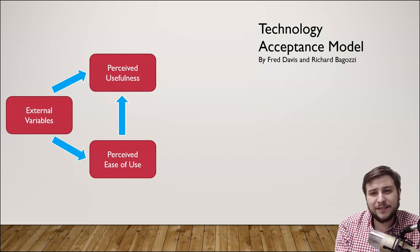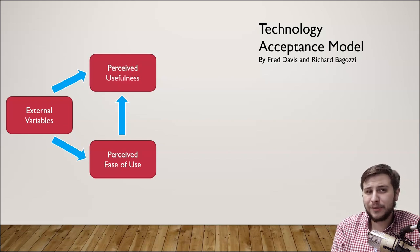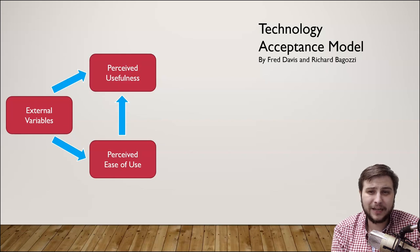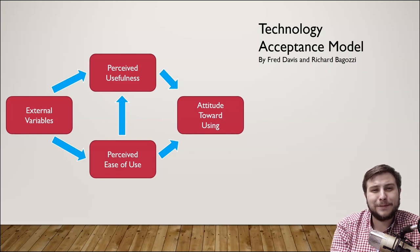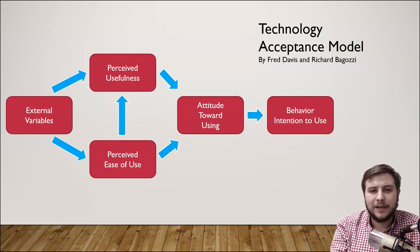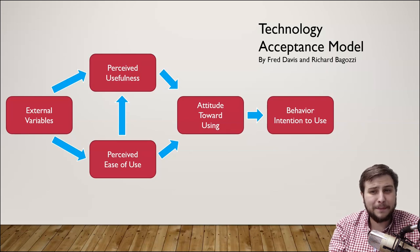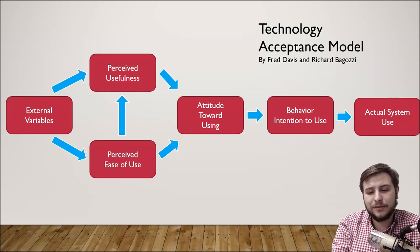Perceived ease of use will actually influence perceived usefulness. If something is really hard to use, that's going to affect a person's understanding of how useful it is. Most people, cognitively speaking, want to pick up a new piece of technology and use it right away without opening a how-to guide. Those two factors create a specific attitude toward using the technology — positive or negative — which leads to behavioral intention to use. If they think it's useful and easy, they'll use it; if the intention is negative, they more likely will not.